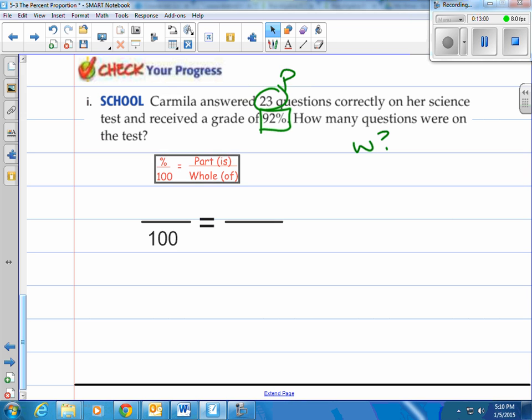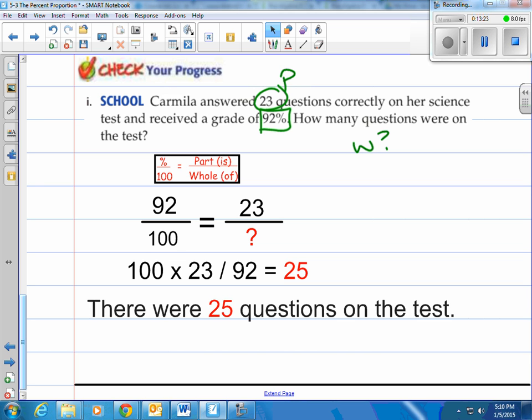Set up our little proportion, and we're looking for the whole, so that's going to be our question mark. We do know that 23 is going to be the part, and we actually know what you got, you got a 92%. All right, that's simple. All we have to do now is cross multiply. 100 times 23 divided by 92 is 25. So therefore, there were 25 questions on the test.